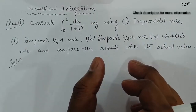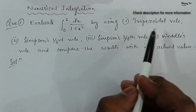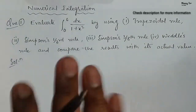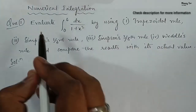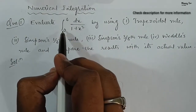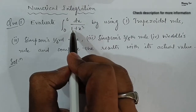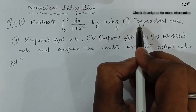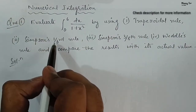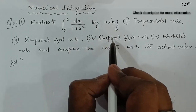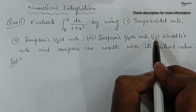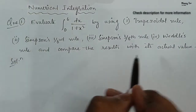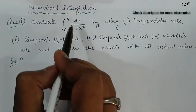In this first question we will be discussing where to use each rule — trapezoidal rule, Simpson's 1/3 rule, Simpson's 3/8 rule, or Weddle's rule. The question says: evaluate the integration from 0 to 6 of dx/(1+x²) using these four rules, and then compare the results with the actual value.